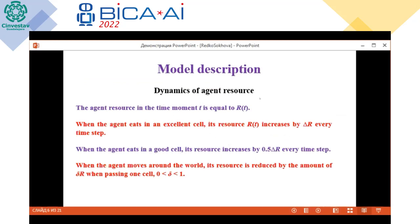The dynamics of the agent resource. Any agent has its own resource. When the agent eats in excellent cells, its resource discretely increases by a rather large value at each time step. In a good cell, the resource also increases, but by a smaller amount. When the agent moves around the world, the resource is reduced by a certain amount, delta R.